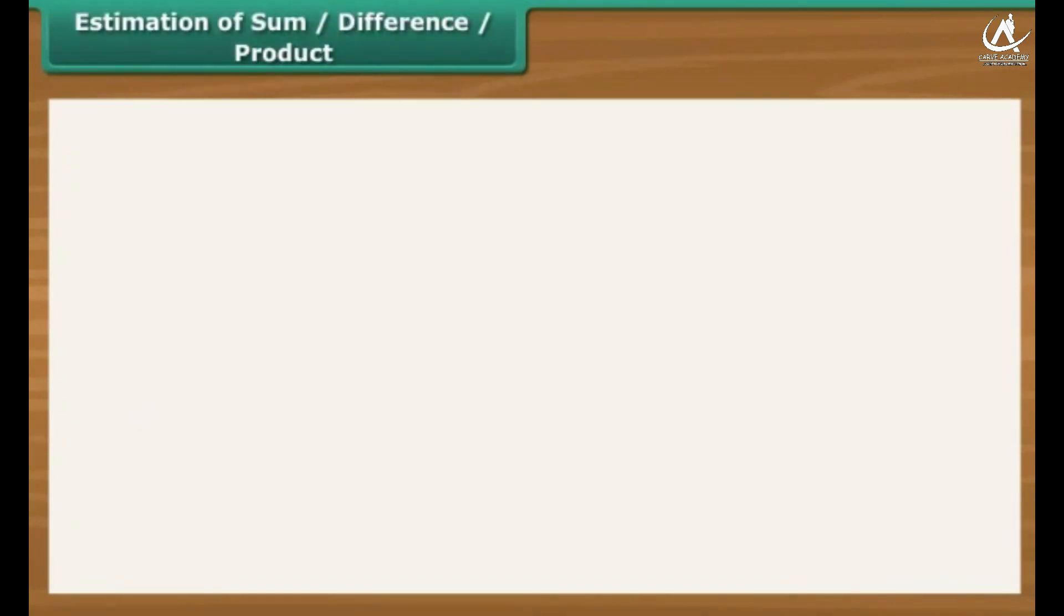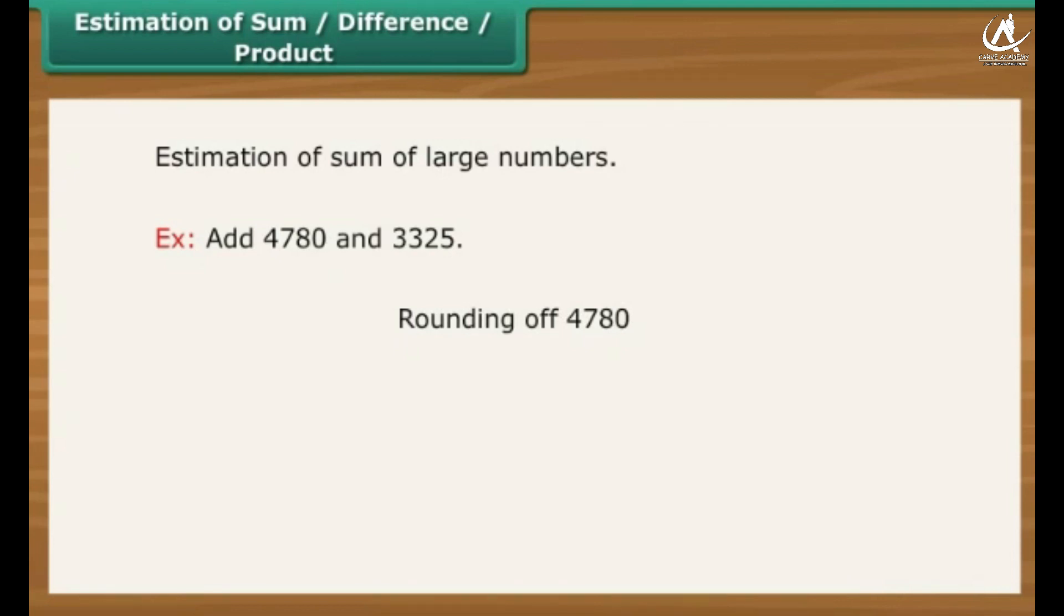Estimation of sum, difference, product. Estimation to nearest number can help in the estimation of the sum of two large numbers. For example, add 4,780 and 3,325. Rounding off 4,780 would make it 4,800. Rounding off 3,325 would make it 3,000. Sum of the two, 7,800.